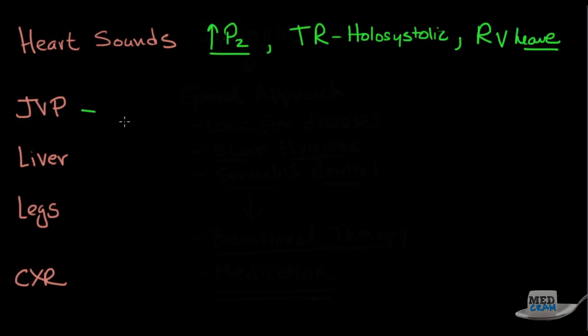On JVP, because of the pulmonary hypertension, you're going to notice larger CV waves, otherwise known as regurgitant waves. And it's this regurgitation that allows you to estimate the PA pressure. The liver is going to be pulsatile. The legs are going to have edema.